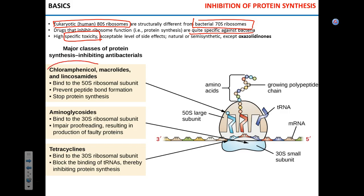Any drug has side effects. For instance, chloramphenicol, if used for an extended period, can trigger aplastic anemia — a disease of the bone marrow where people do not produce red blood cells, a really life-threatening condition. Tetracyclines are phototoxic — products of their degradation accumulate in the skin and can cause toxicity, so you're recommended not to go outside in the sun. Every time a drug is prescribed, we weigh the benefit-to-risk ratio.